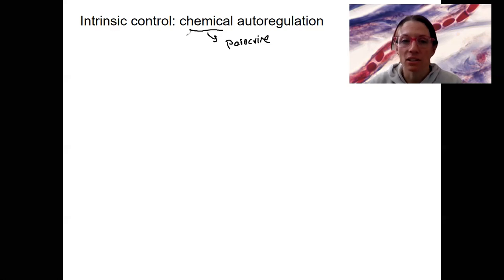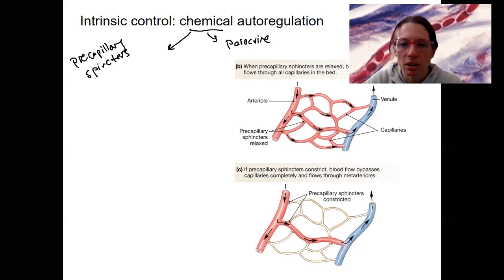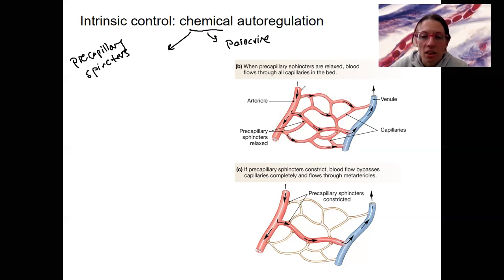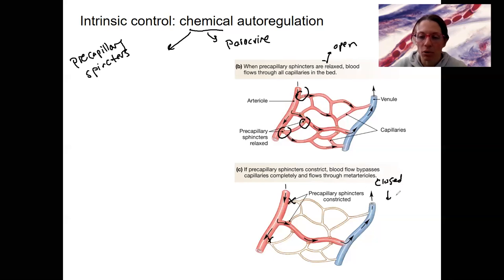Chemical signals are going to act on the precapillary sphincters. Let me show you a picture — the same image from last week. When precapillary sphincters are relaxed, that means they're open, and blood can get through them. Here are some precapillary sphincters spread throughout the arterial end of the capillary. When those sphincters are constricted, blood flow cannot get through, so it passes through only the middle channel, resulting in low perfusion in those tissues. When relaxed and open, you have high perfusion.